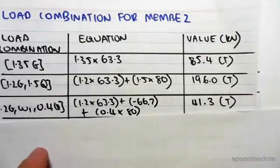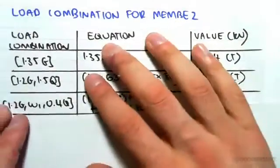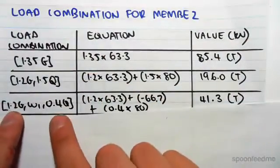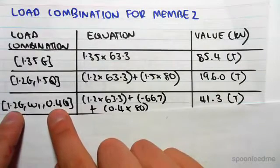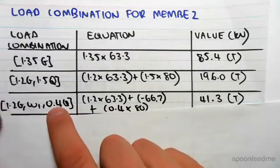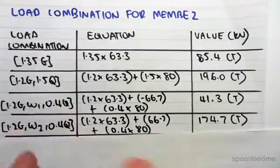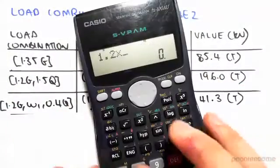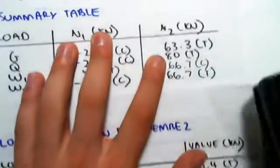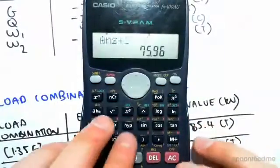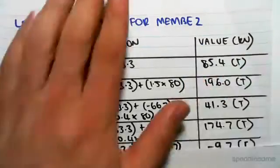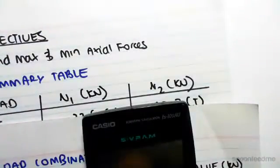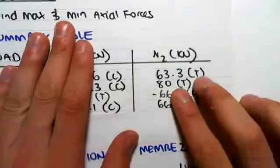The next one is 1.2G plus wind plus 1.4Q. Now just to save a bit of time, it's smarter to store the values for 1.2G plus 0.4Q because that's going to appear there and there. So 1.2 times 63.3 plus 0.4 times 80. We're going to store that.